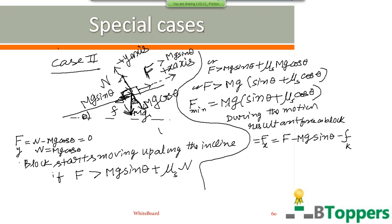Now I substitute F equal to mg sin θ plus μs cos θ — that is, the force applied on the block equals the minimum force needed to just start it moving. So F equals mg sin θ plus μs mg cos θ, and the magnitude of kinetic friction is given by νk times the magnitude of normal reaction.